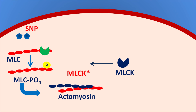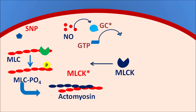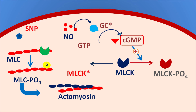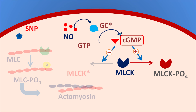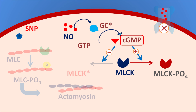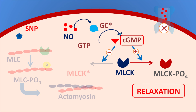Sodium nitroprusside enters the vascular smooth muscle and releases nitric oxide. This nitric oxide stimulates the guanylyl cyclase system, which converts GTP into the important secondary messenger cyclic GMP (cGMP). Cyclic GMP then phosphorylates MLCK, converting it into the inactive MLCK-phosphate form, and also inhibits MLCK activation. By these actions — plus inhibiting calcium entry — sodium nitroprusside produces relaxation of the vascular smooth muscle, reducing blood pressure. This is why the drug is indicated in hypertensive crisis.